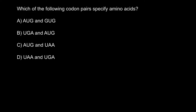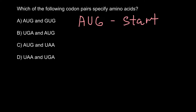The start codon sequence would be A, U, G — and of course this is an mRNA sequence because here we have uracil instead of thymine. This specifies the start codon, but the start codon also specifies the amino acid methionine. This is the difference from the stop codons, which don't specify any amino acids — they are just used to interrupt protein production and translation of the mRNA.